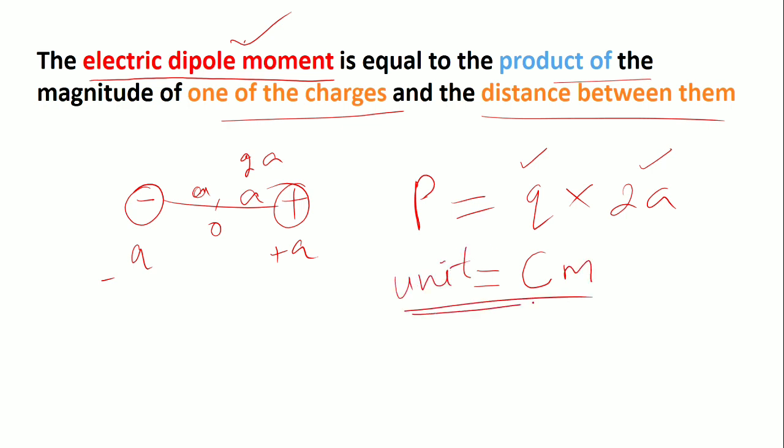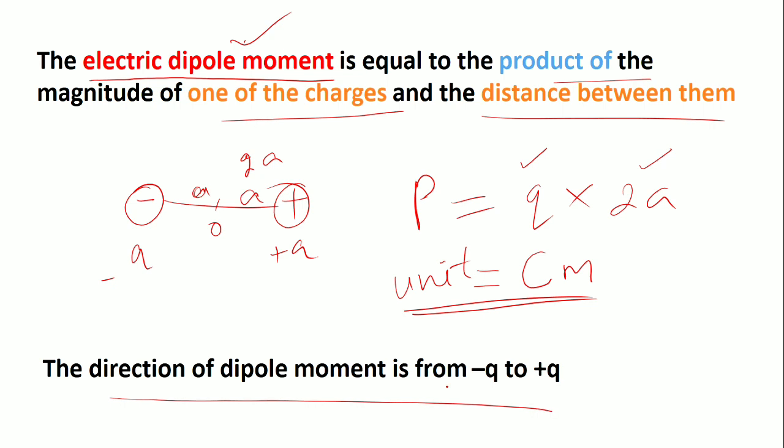Next, the direction of the dipole moment is from minus Q to positive Q. So this is the direction of dipole moment, from minus Q to positive Q.